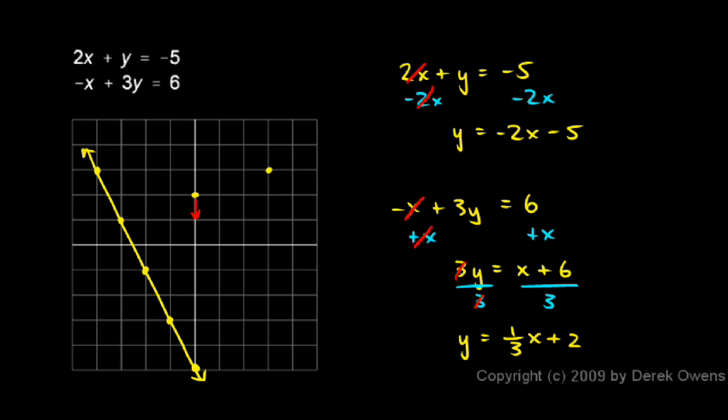Or I could go down 1 and left 3, and that would put me right there, and we can see where the two lines are going to cross. I'm going to go ahead and draw in this second line right there.